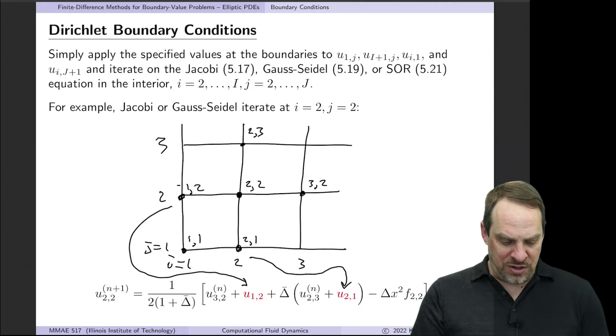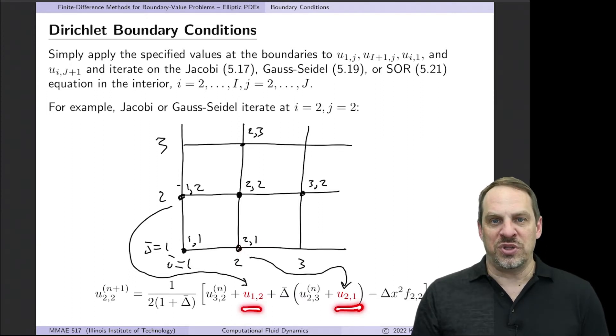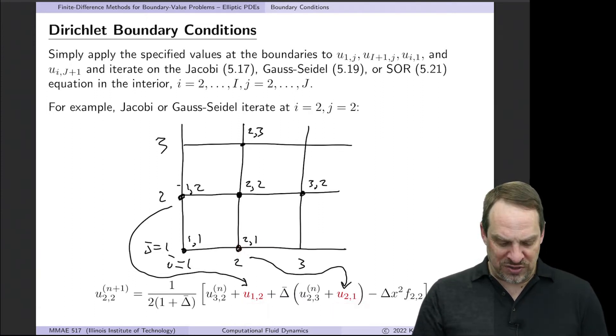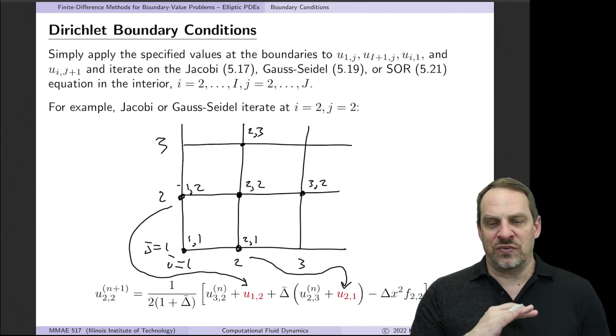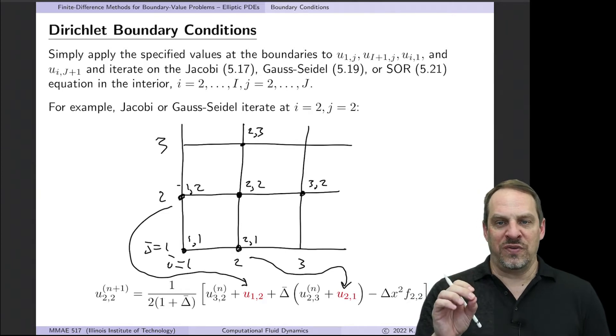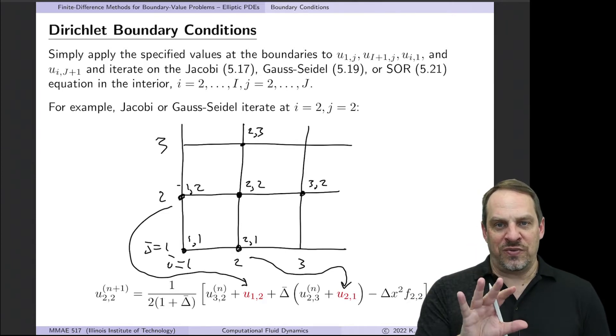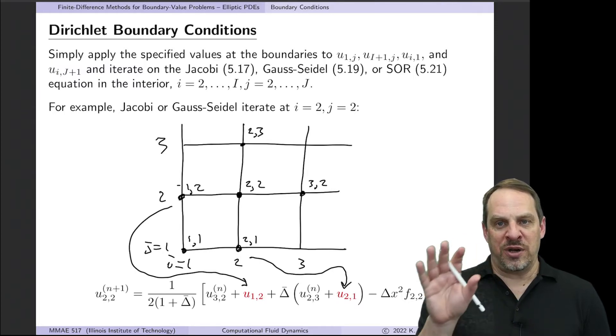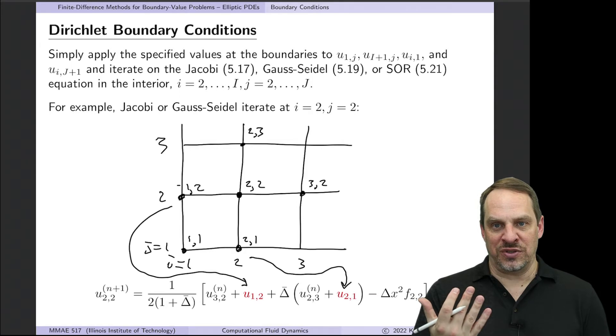it would be here I minus 1J and here IJ minus 1. Those values are known, but they're already in the array. So it just picks them up and evaluates them along with the other points here and here in your 5-point finite difference stencil to get an approximation for U2,2. So Dirichlet is very straightforward. Just put the known values on the boundary, only evaluate the difference equation in the interior, and it will pick up when necessary points on the boundaries, and everything is fine.